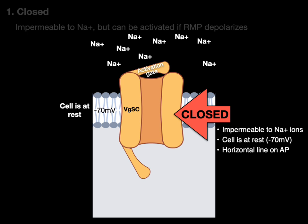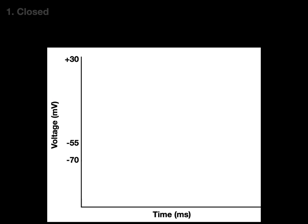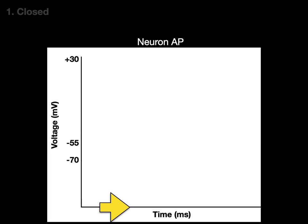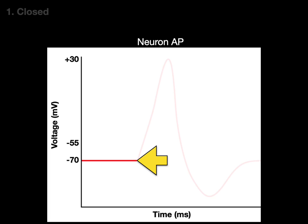The closed state corresponds to the horizontal line on an action potential graph, where the x-axis is time in milliseconds and the y-axis is voltage in millivolts. That horizontal line means the cell is at rest and the membrane is impermeable to sodium — the voltage-gated sodium channels are closed.